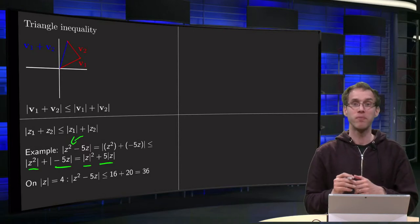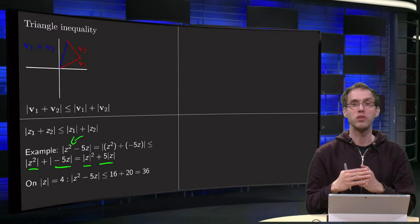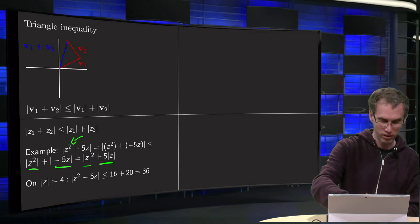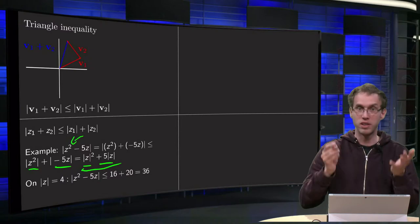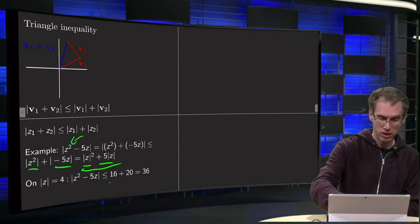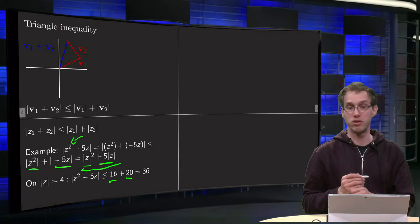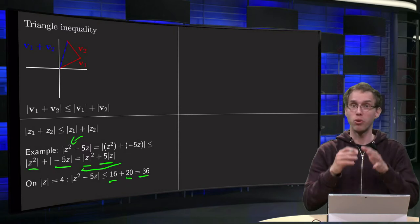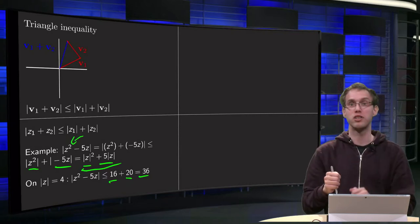How can you use that? Well, if your norm of z is constant — if you are on some circle — then you can estimate the quantity |z² − 5z|. Because on this circle, you know that |z² − 5z| is smaller than the norm of z² plus 5 times the norm of z. On the circle where the norm of z equals 4, for example, with radius 4, the norm of z² equals 4 squared equals 16, plus 5 times 4 equals 20, giving 36. So you don't know exactly how big it is, but you know that it is smaller than 36.